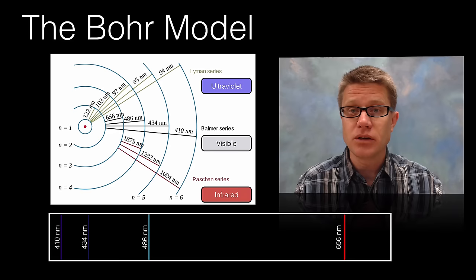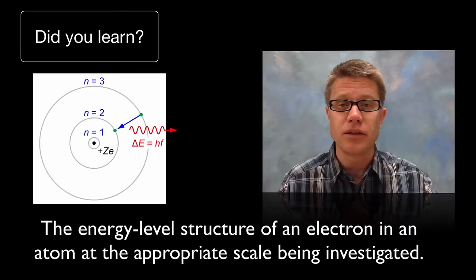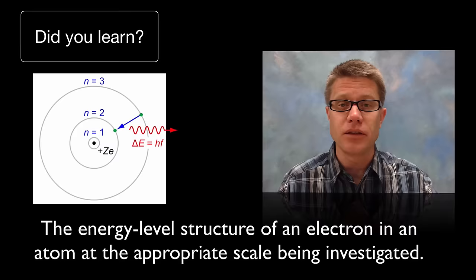And so again this only works for hydrogen. And so it is a good step model or it is a good model to get you started on understanding how the atom is really put together. But did you learn the energy level structure of an electron in an atom at the appropriate scale being investigated? In this case it is at these energy levels in hydrogen atom. I hope so. That is the Bohr model and I hope that was helpful.